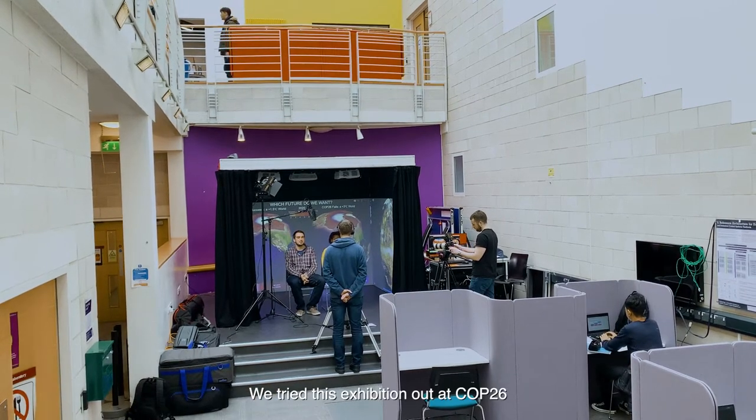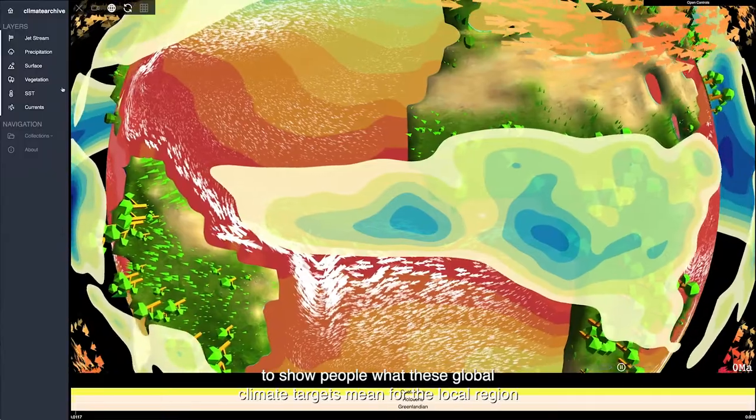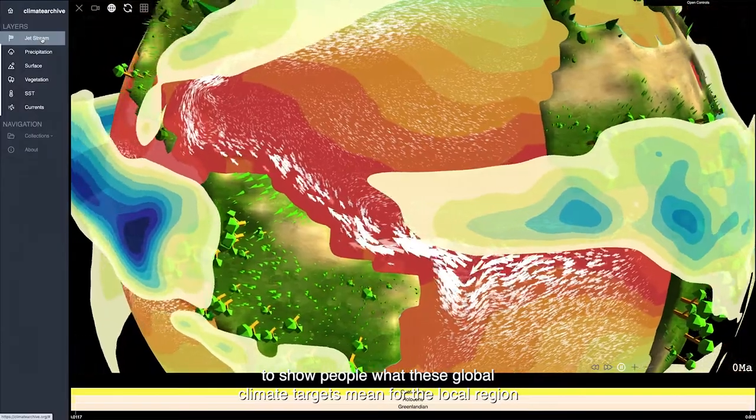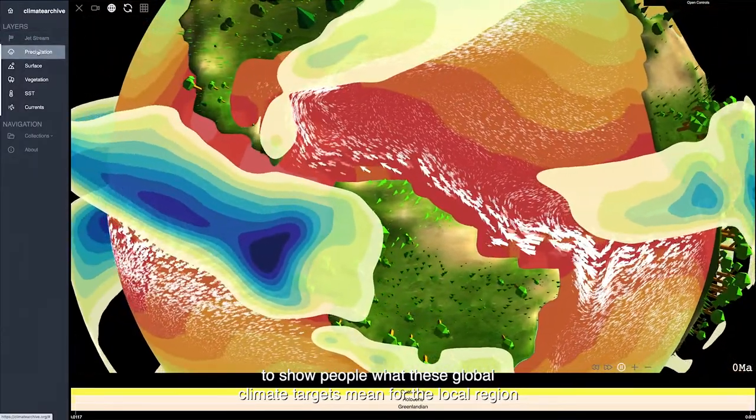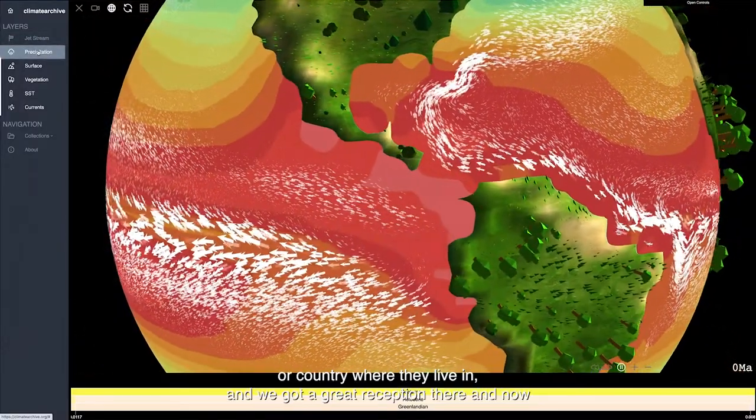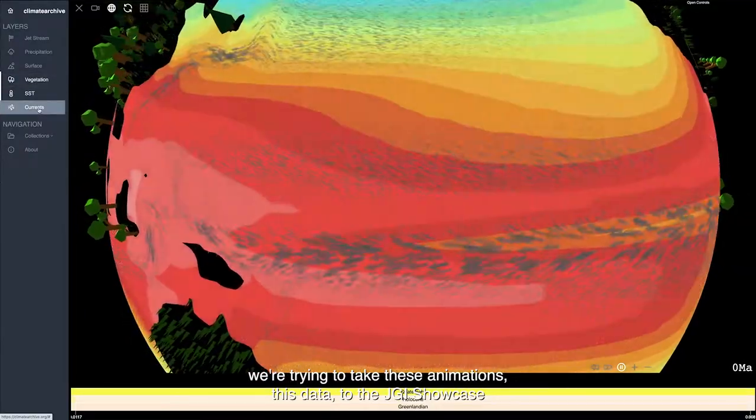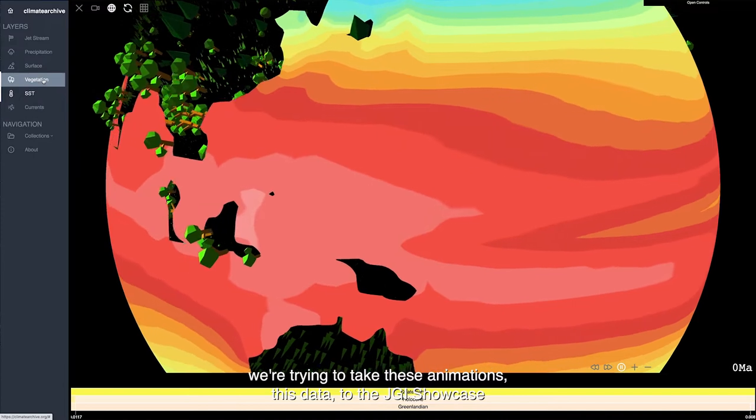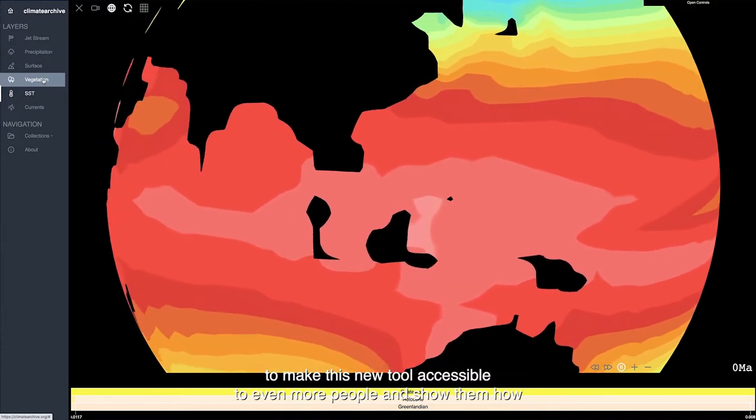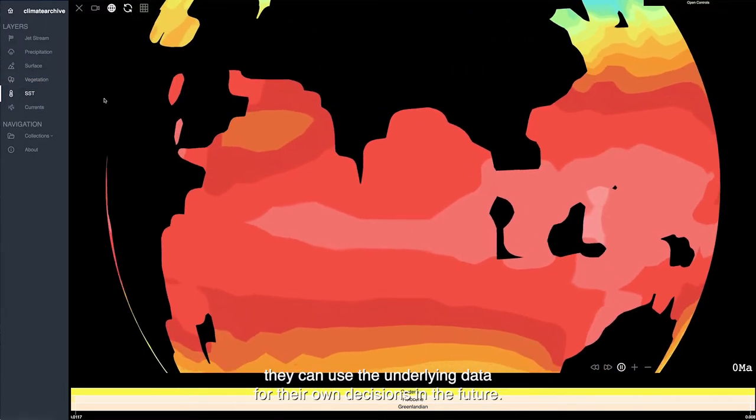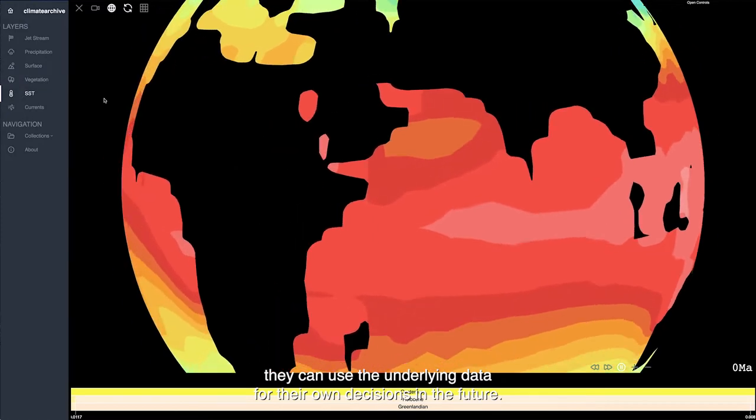We tried this exhibition out at COP26 to show people what these global climate targets mean for their local region or country. We got a great reception there and now we're trying to take these animations and this data to the JGI showcase to make this new tool accessible to even more people and show them how they can use the underlying data for their own decisions in the future.